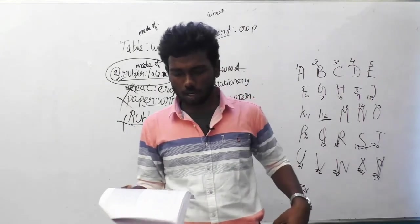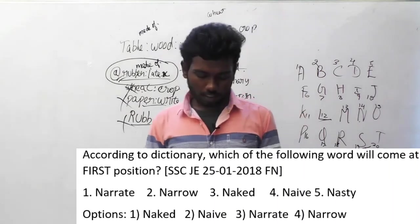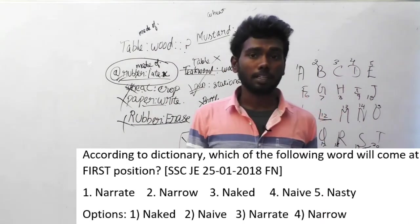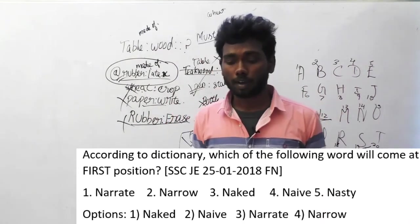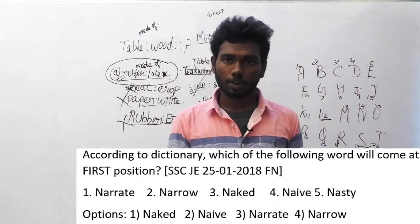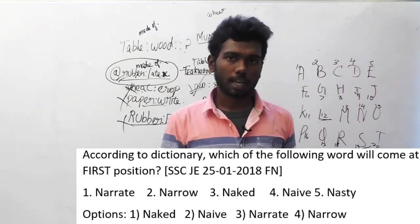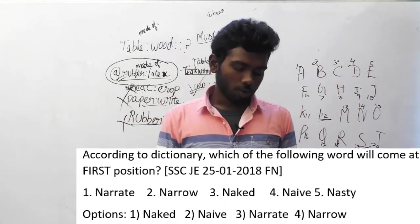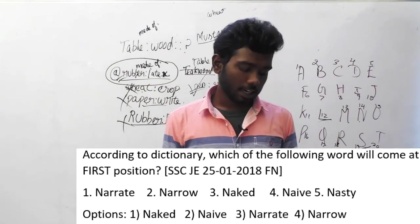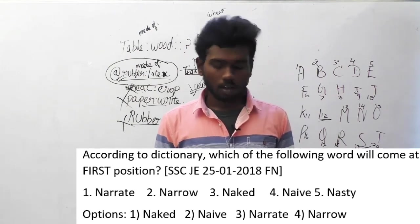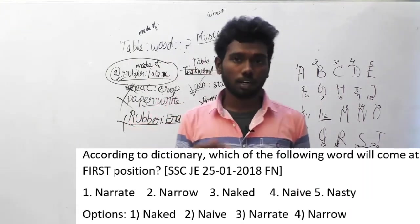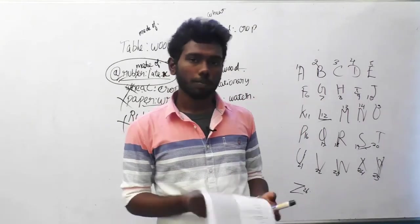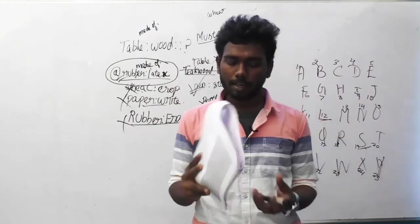Let us move on to the next question, 135. According to the dictionary, which of the following words will come at first position? The options are: option 1 narrate, option 2 narrow, option C naked, option 4 naive, option 5 nasty. Without even looking at the options themselves, we can clearly say that naive comes first before every other option. The answer is option B, naive.